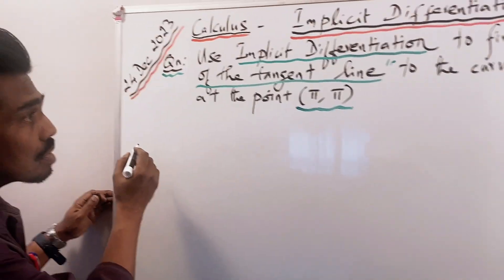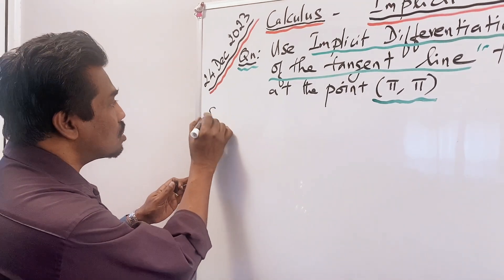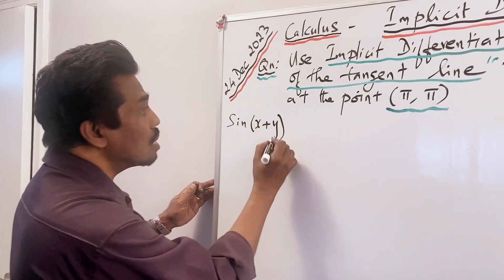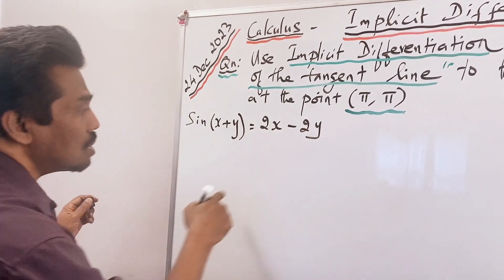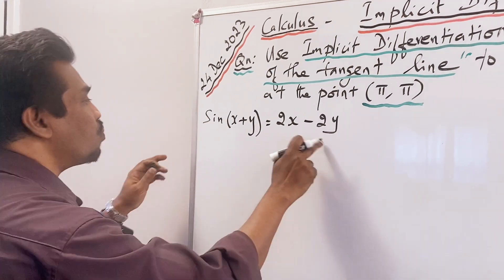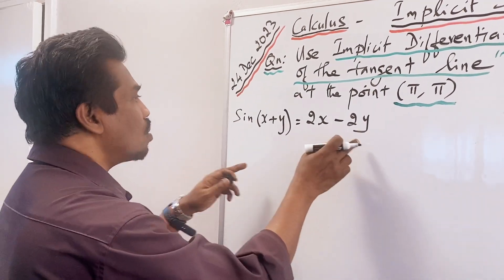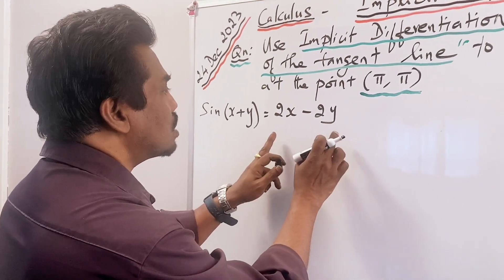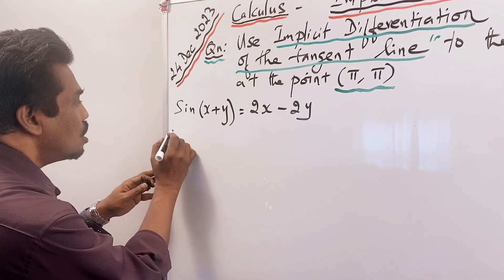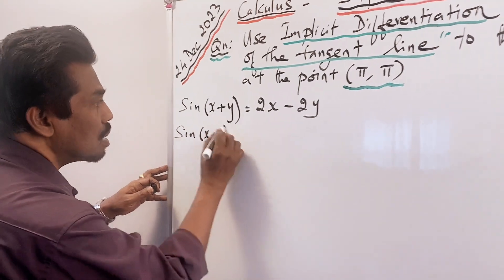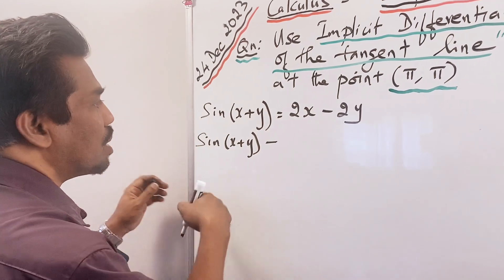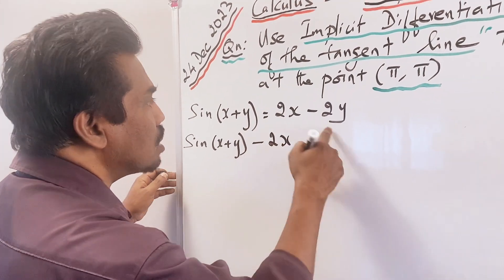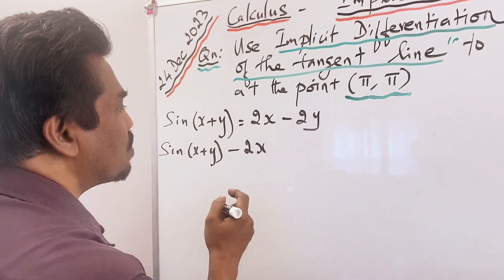Let us write the equation of the curve. The equation of the curve is sin(x + y) = 2x − 2y. Let us write it in a linear form so that all the right-hand side terms come to the left-hand side. So sin(x + y) − 2x + 2y = 0.